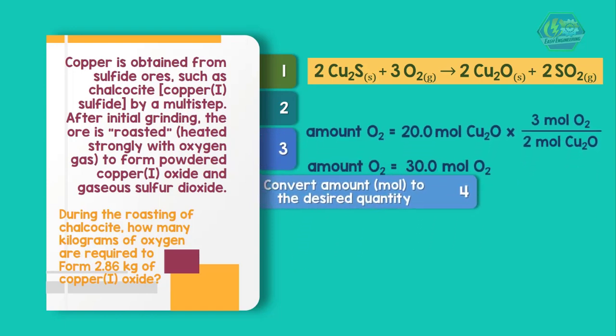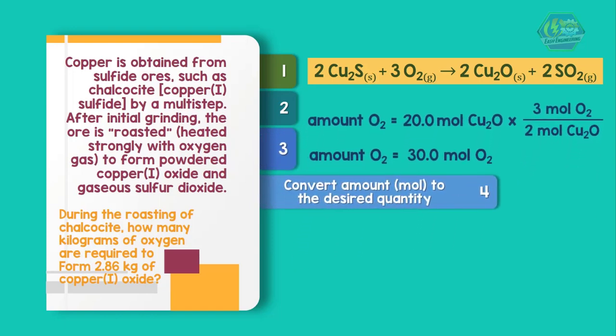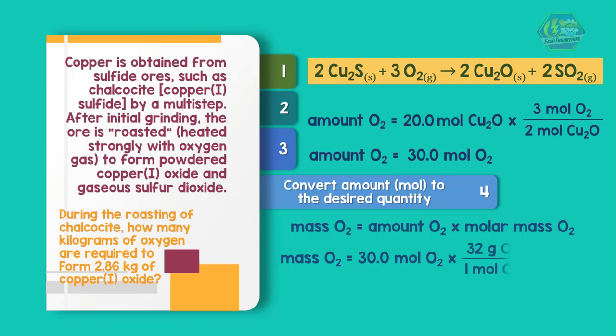The fourth step, convert the amount in moles to the desired quantity. The amount in moles of oxygen equals 30 moles and the molar mass of oxygen equals 32 grams per mole. So we have 30 moles times 32 grams per mole equals 960 grams, which equals 0.96 kilograms.